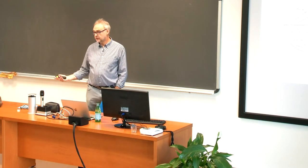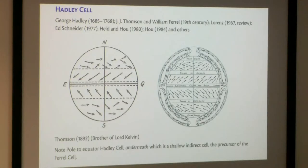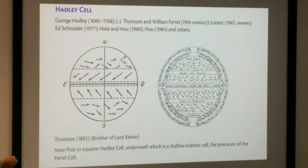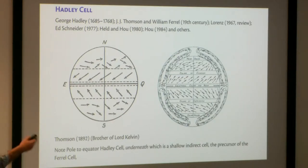Why does the Hadley cell stop? You might reasonably think that heating at the equator causes air to rise, go polewards, sink where it's cold at the pole, and come back. That's not a dumb idea at all. So why doesn't it do that? This is the modernish view.